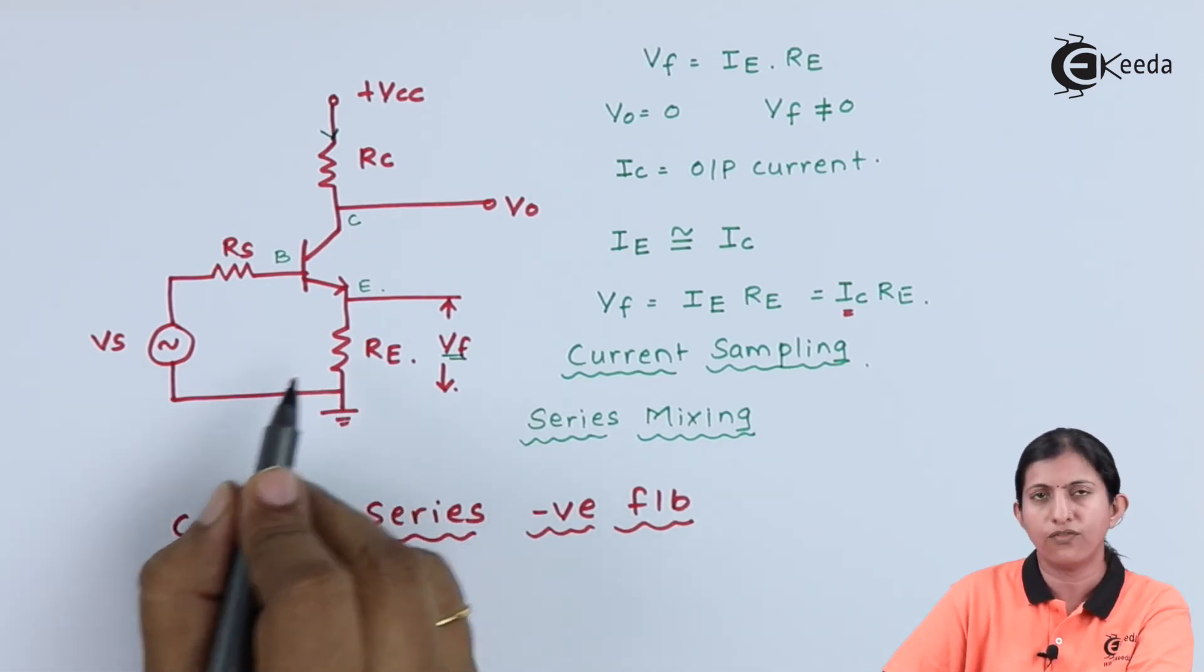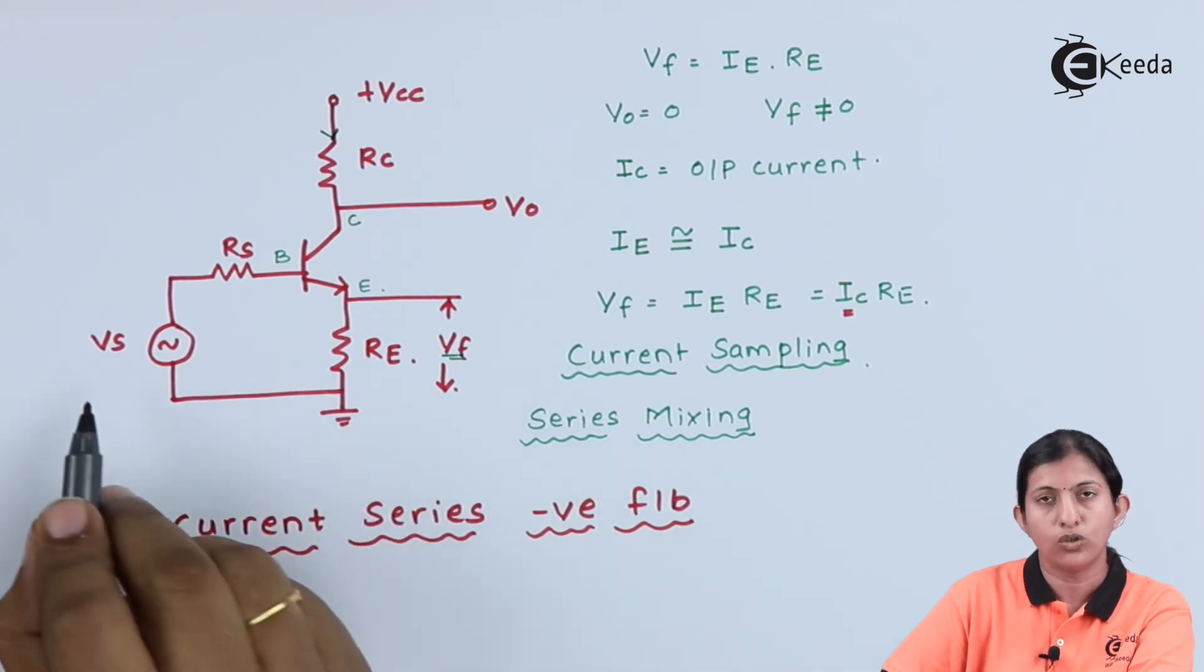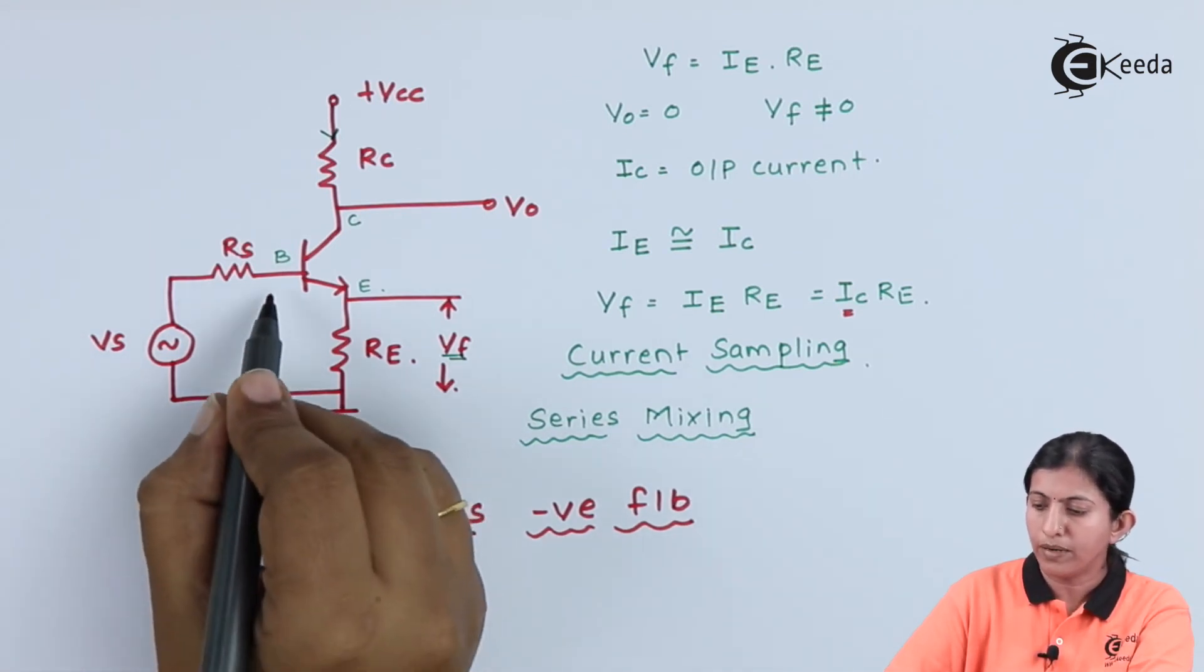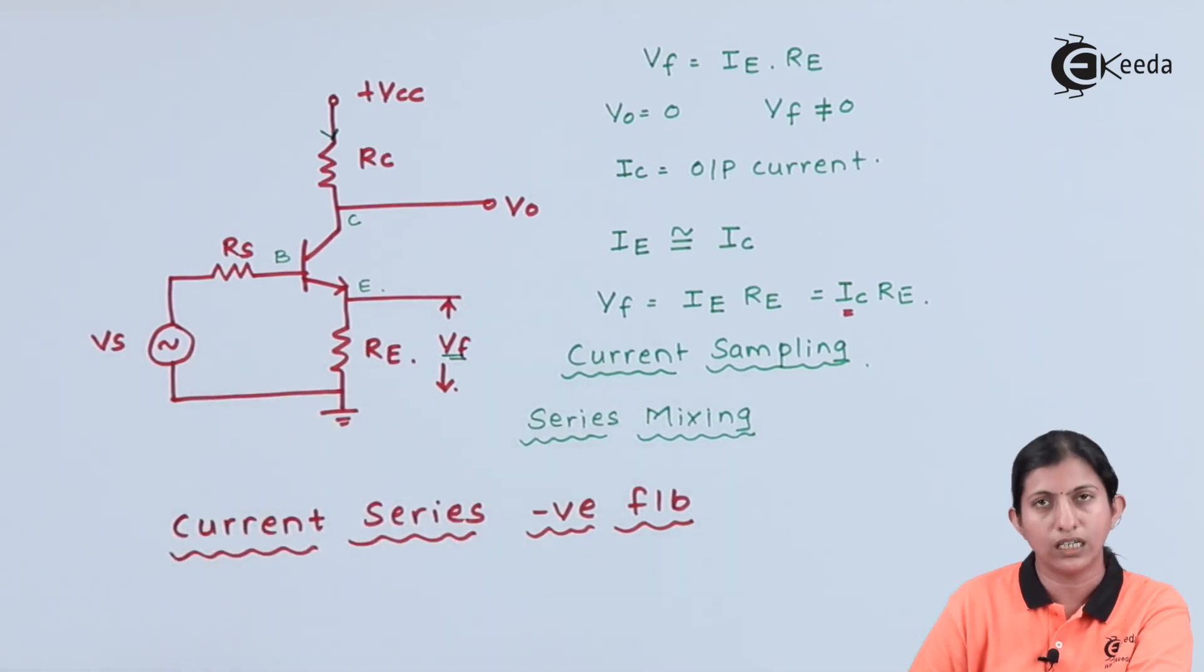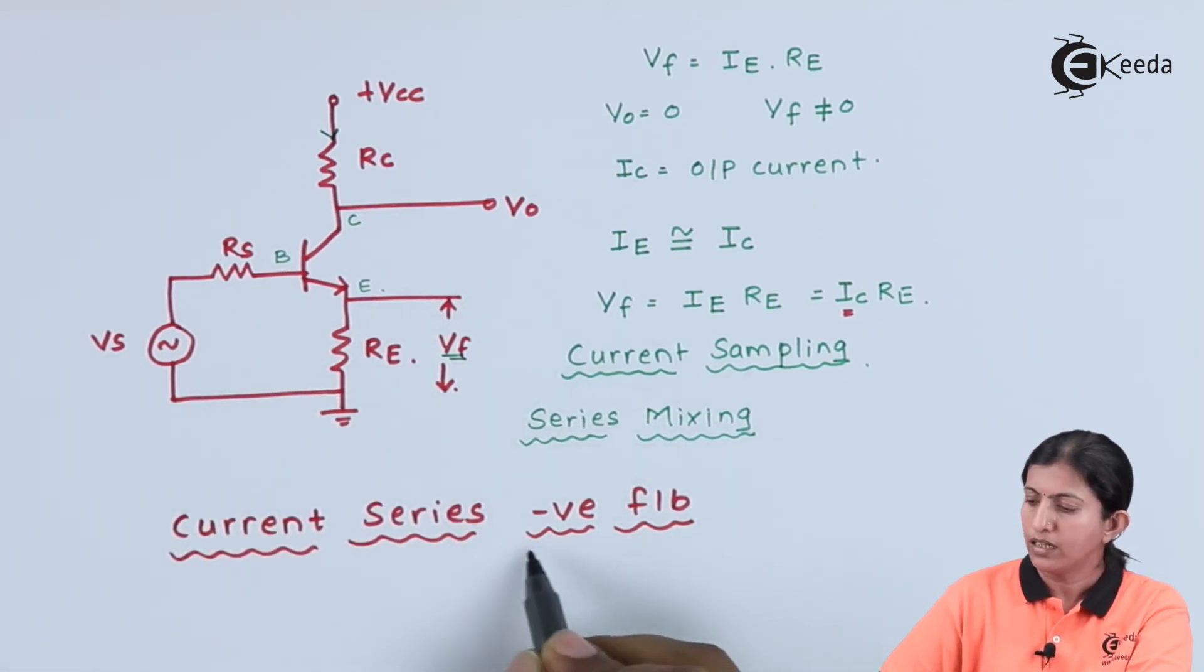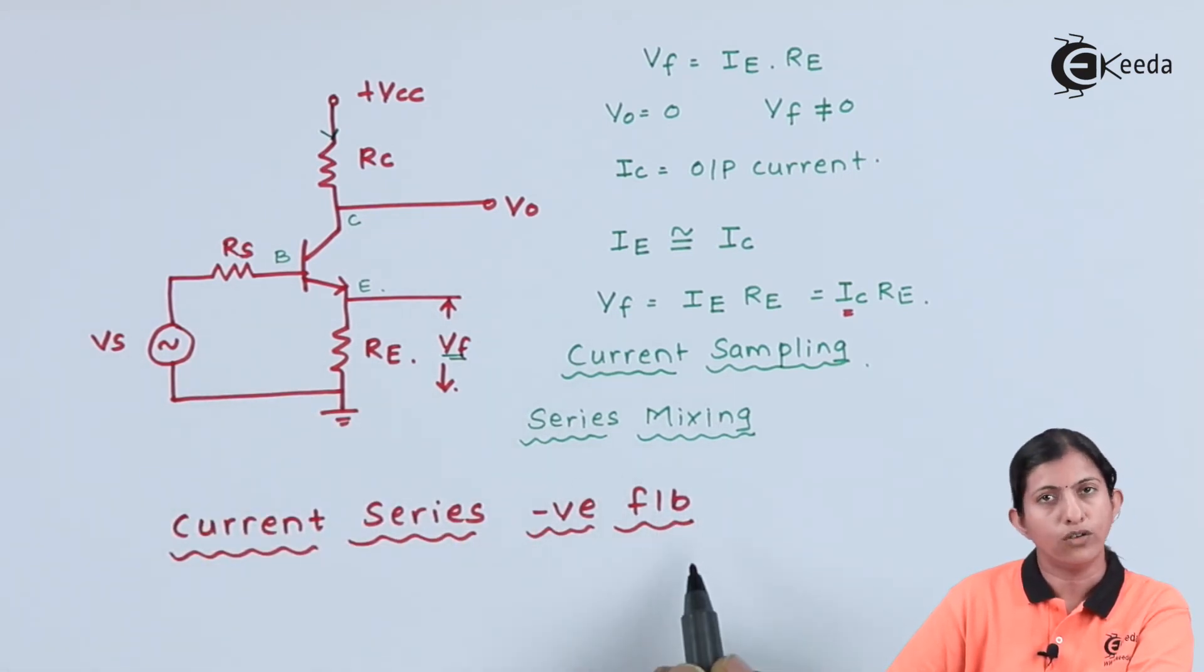And as they oppose each other, that means there is a phase difference between the two signals, two voltages, the ultimate input going to the base of the transistor decreases. And because of that, this feedback is negative feedback.